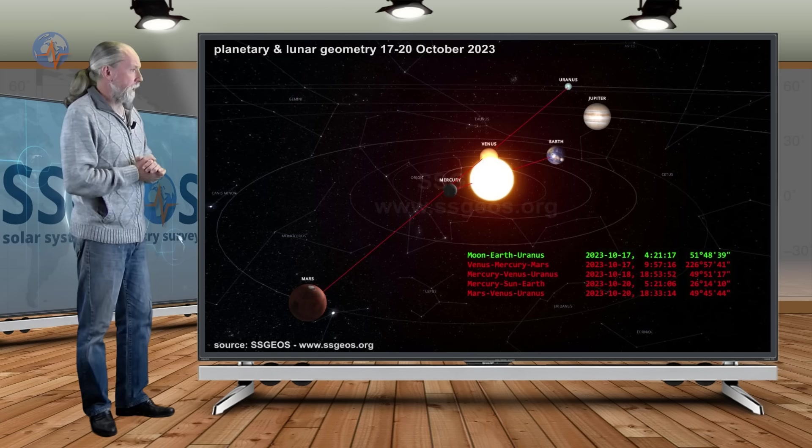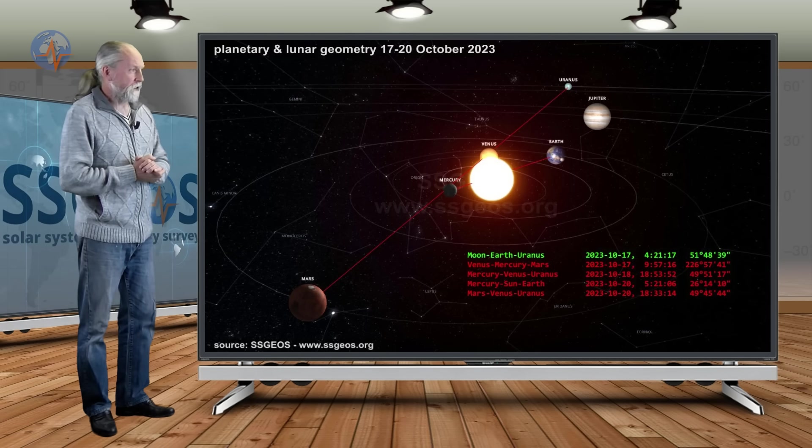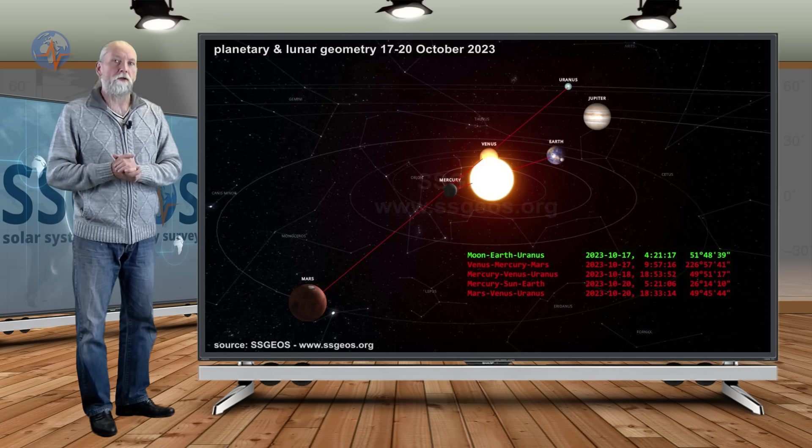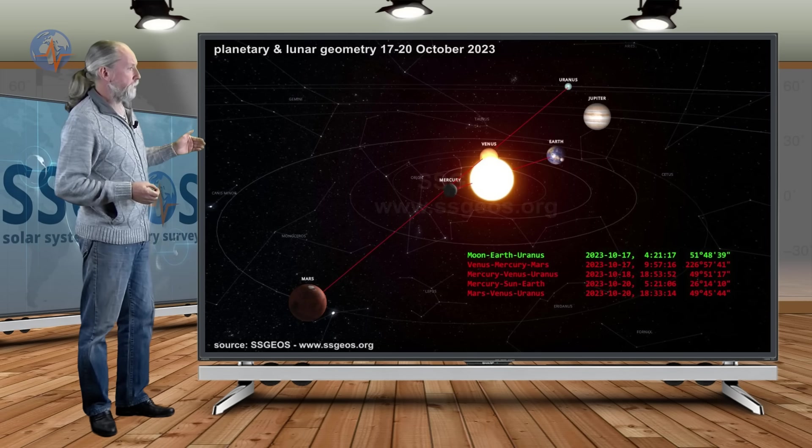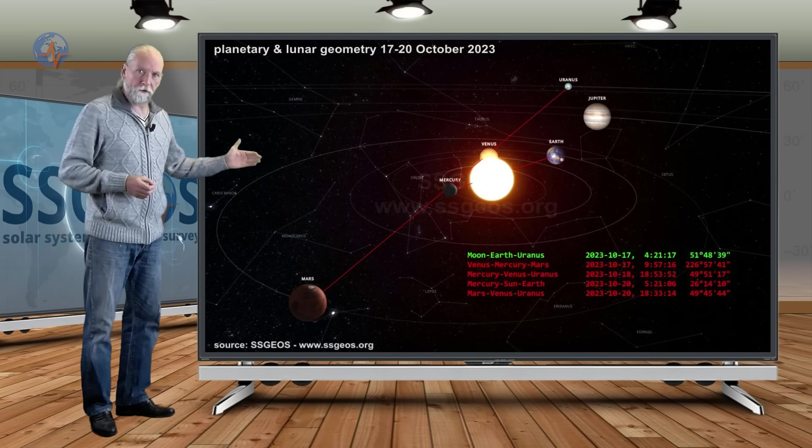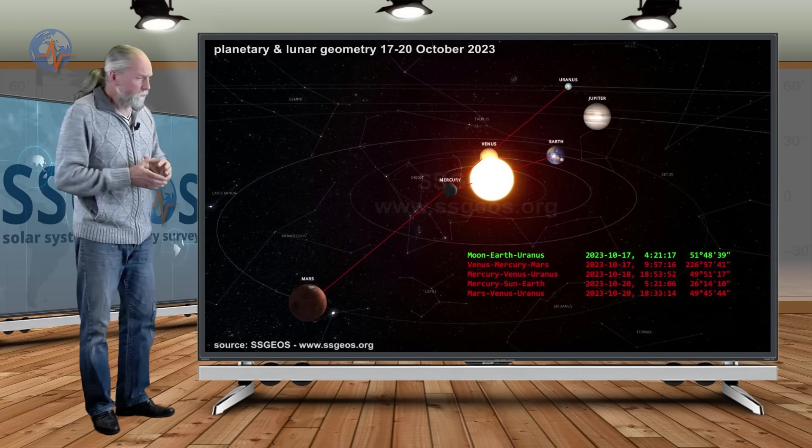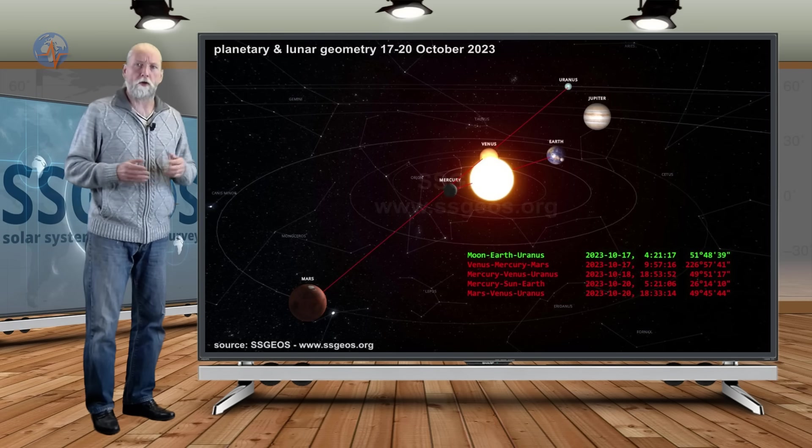We can see we're likely going to see increased seismic activity with this planetary geometry. We also see Mercury, Sun, and Earth in a conjunction on itself, not necessarily critical, but in combination with the other planetary conjunctions we can see considerable seismic increase there.